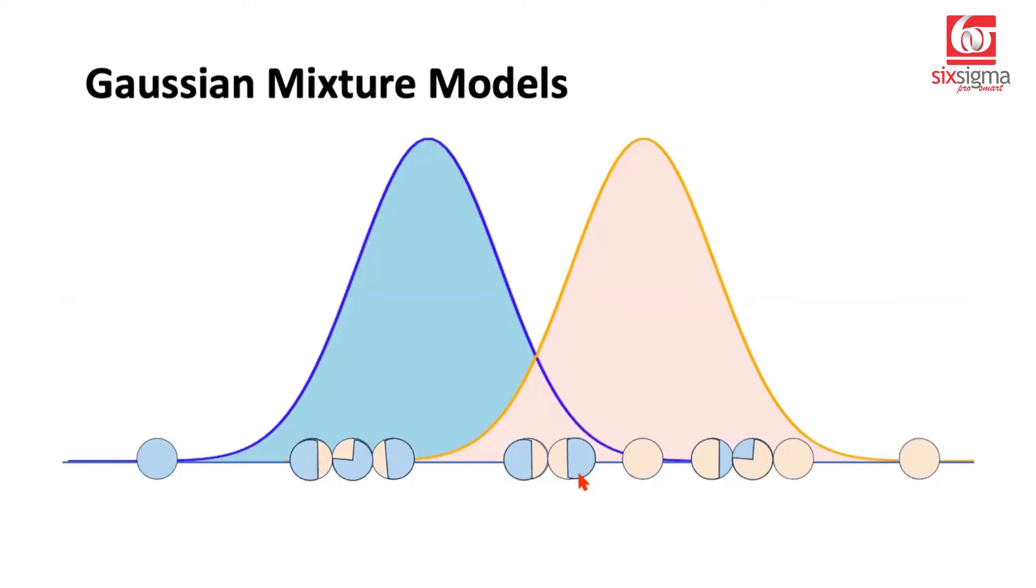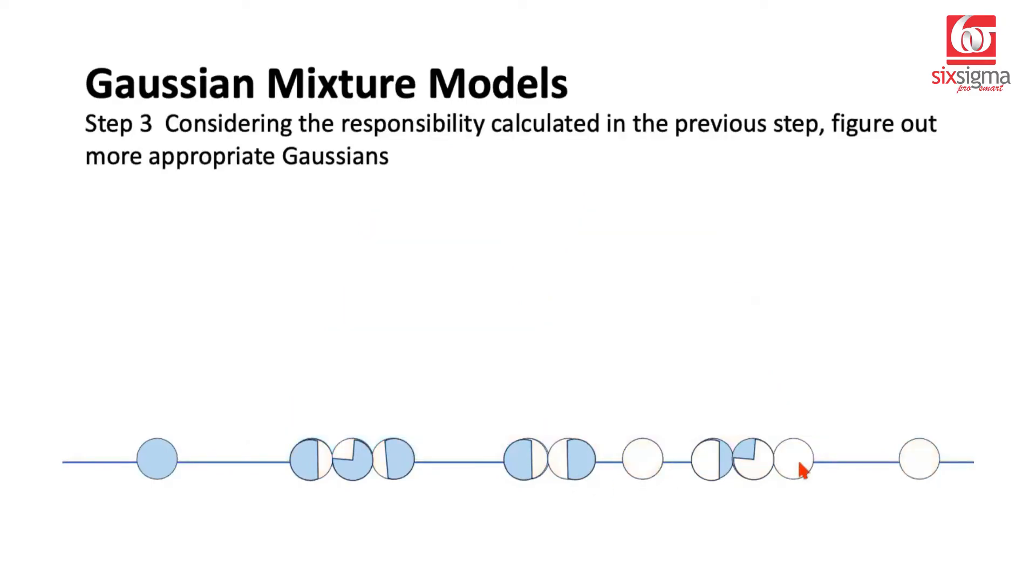Once we are done with assigning the responsibility to each data point, the next step is to only focus on specific points for particular Gaussians. This means right now we are only going to consider the blue points first, and then we will consider the other points, which means we'll have to consider these points for each Gaussian distribution separately. So we already have done the responsibility assignment. Now, as per the presence of these blue points, we are going to reconsider the distribution assignment, which means we are going to once again compute the normal distribution.